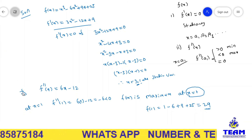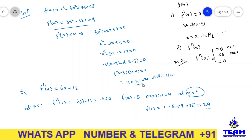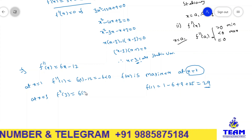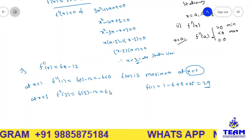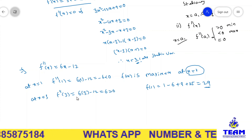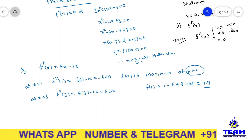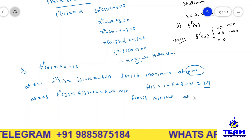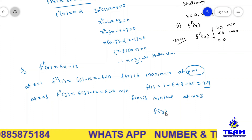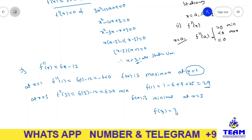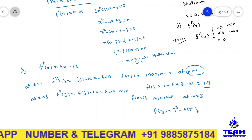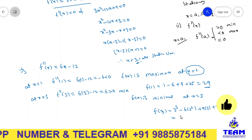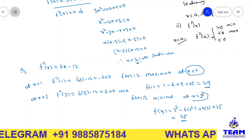Similarly, we discuss the extreme value at the other stationary point x equal to 3. f double dash of 3 equals 6 times 3 minus 12 equals 18 minus 12 equals 6, which is greater than 0. So f of x is minimum at x equal to 3. The minimum value is f of 3: 3 cube minus 6 times 3 square plus 9 times 3 plus 25 equals 25. So the minimum value is 25 at x equal to 3.